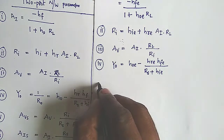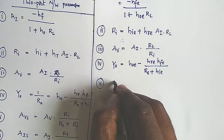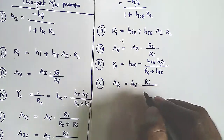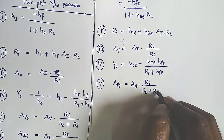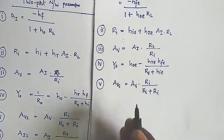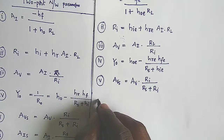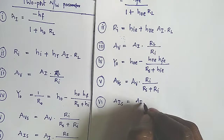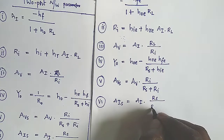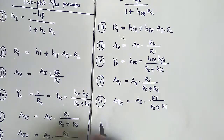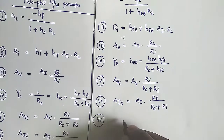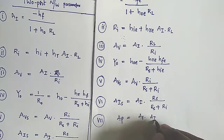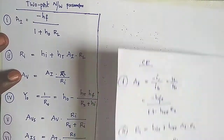The overall voltage gain AVS = AV·RI / (RS + RI). The overall current gain AIS = AI·RS / (RS + RI). The power gain AP = AV·AI. These complete the set of parameters derived from the small signal hybrid model.